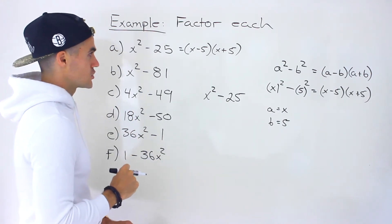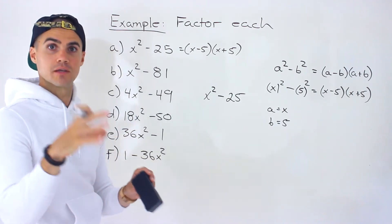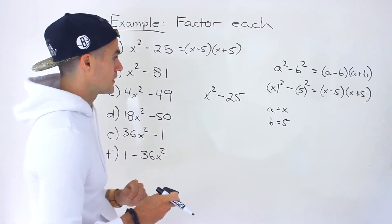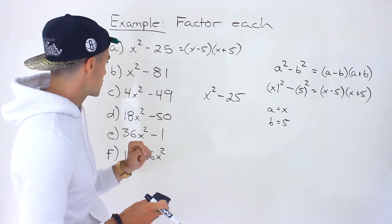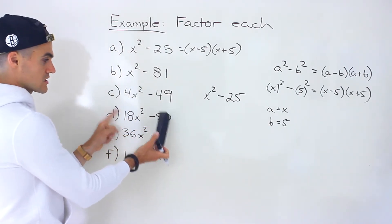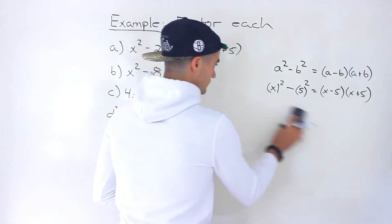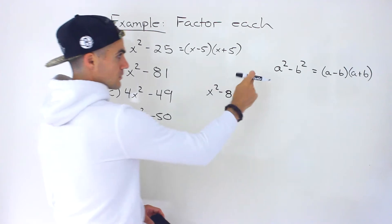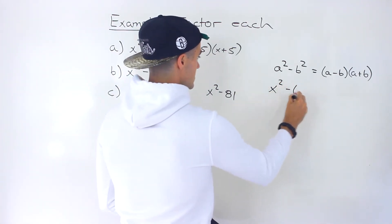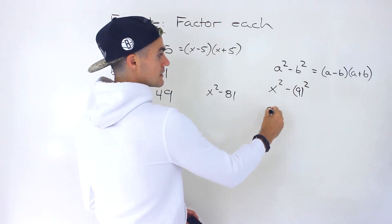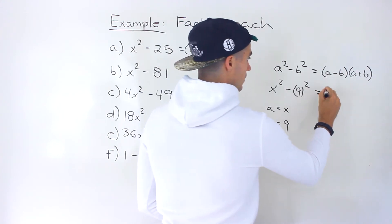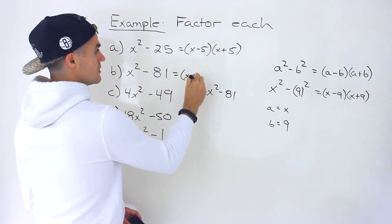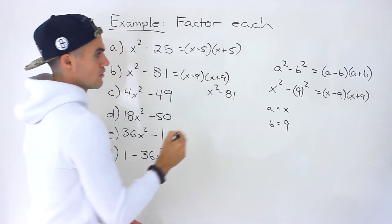One thing to always check at the beginning of any factoring is taking out greatest common factors. From x squared minus 25, we couldn't take anything out initially. In part d we will be able to take out a 2, but we'll get there. Next, x squared minus 81: rewrite as x squared minus 9 squared, so the a value is x, the b value is 9. That factors into (x minus 9)(x plus 9).